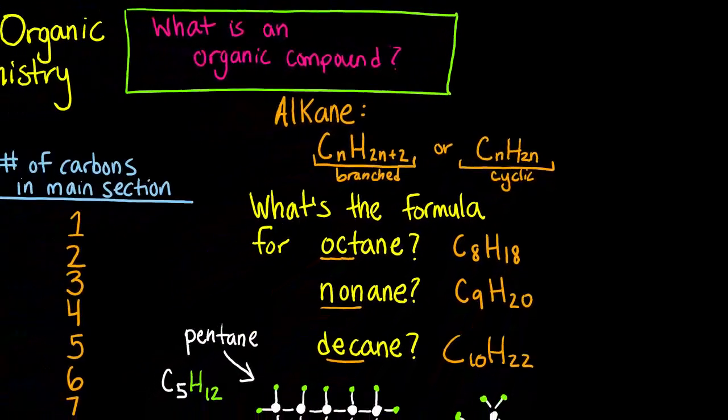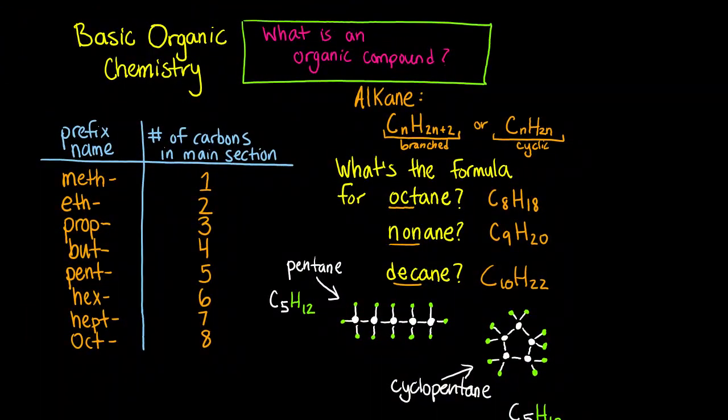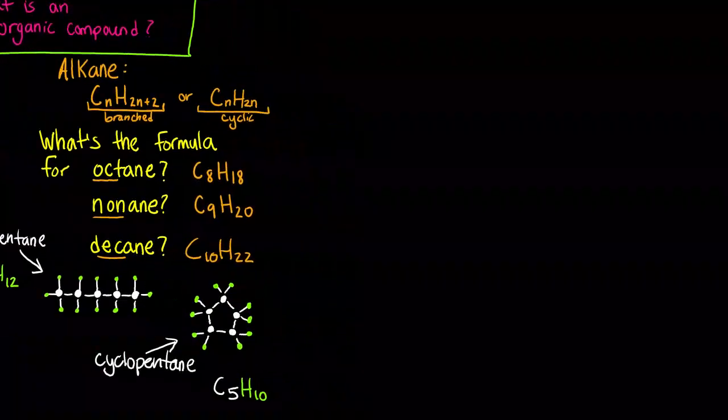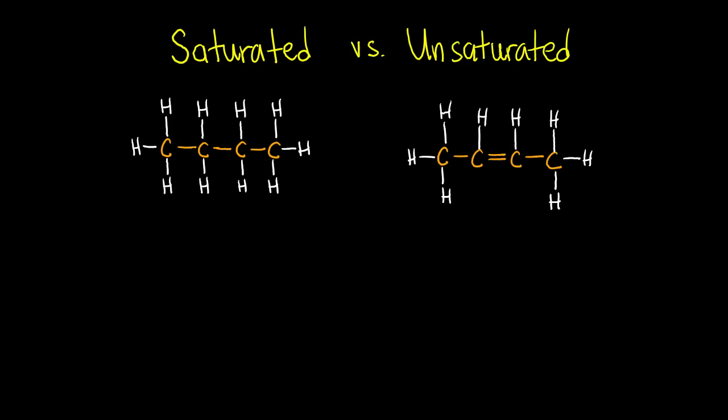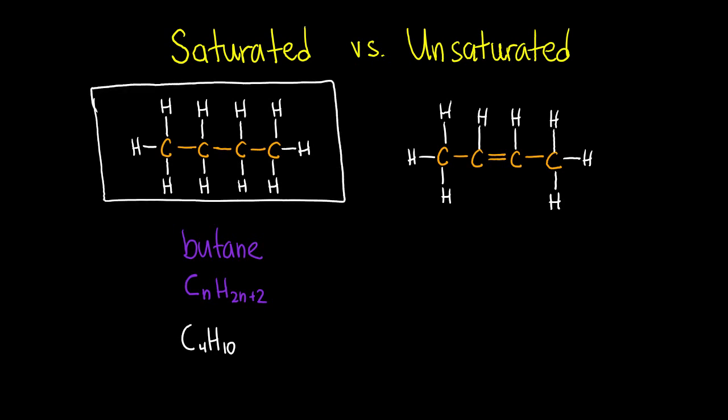At any rate, we consider these compounds to be saturated, because there are no double bonds. A quick look at saturated versus unsaturated. Take a look at these two different compounds. The one on the left is called butane. In accordance with it being an alkane, it has all single bonds, and fits the formula for a branched or linear non-cyclic alkane of CnH2n plus 2, giving us a formula of butane of C4H10. We would call this compound saturated, because it contains only single bonds.